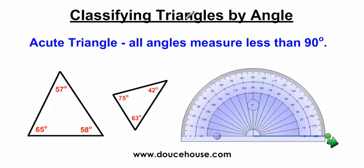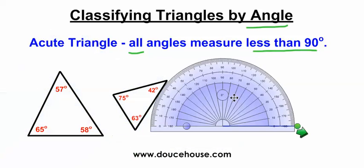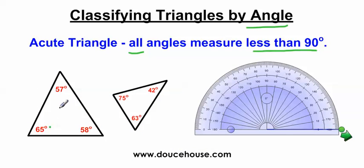Let's move on to classifying triangles by angle. We have an acute triangle — a triangle where all angles measure less than 90 degrees. Just like an acute angle measures less than 90 degrees, an acute triangle has all angles measuring less than 90 degrees. I made these triangles earlier and used a protractor to measure all those angles. If you notice, all the angles inside this triangle are each less than 90 degrees, so that means it's going to be an acute triangle. You've got to check every single angle, and if all angles are less than 90 degrees, then you know it's an acute triangle.